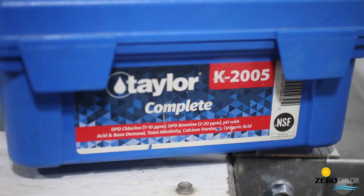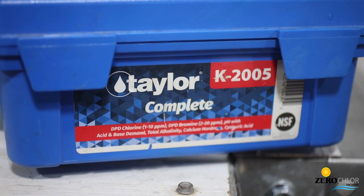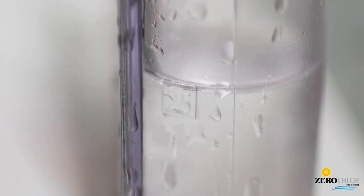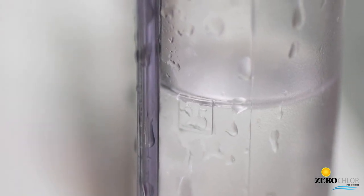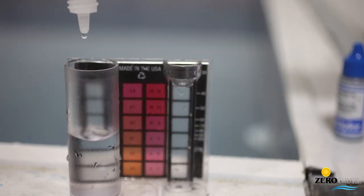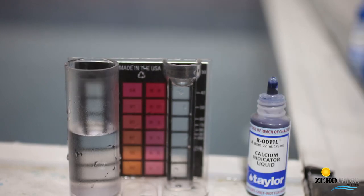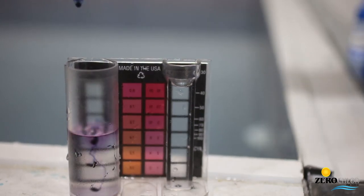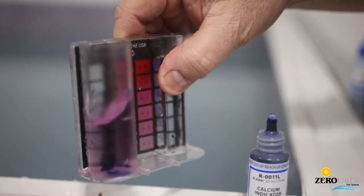There are several ways to test calcium hardness. We use the Taylor K-2005 test kit. Fill large tube to 25 milliliter mark, add 20 drops of the R0010 calcium buffer, then swirl to mix. Add five drops of R0011L, the calcium indicator liquid, dark blue in color. Swirl to mix.